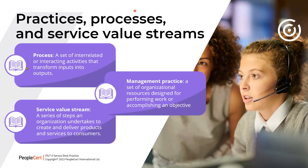A process is a set of interrelated or interacting activities that transform inputs to outputs. A management practice is a set of organizational resources from the four dimensions designed for performing the work or accomplishing an objective. A service value stream is a series of steps an organization undertakes to create and deliver products and services to customers. Examples include a value stream to develop a new service, or a value stream to perform user support — meaning respond to a user query.